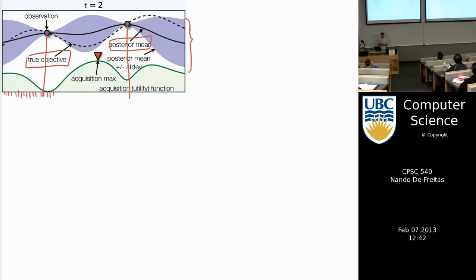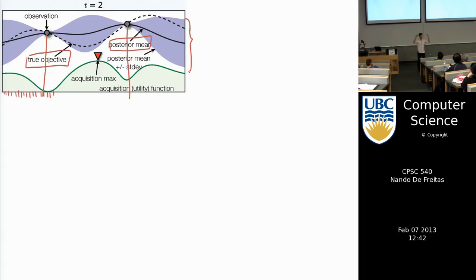We've tried two values. Based on those function evaluations — two data points — we can fit a Gaussian process. Assuming the function is smooth, the posterior mean of the GP is the solid line, and the width of the confidence intervals indicates mu plus sigma and mu minus sigma. Think of the solid line as what's in your head, and the dashed line as the real world.